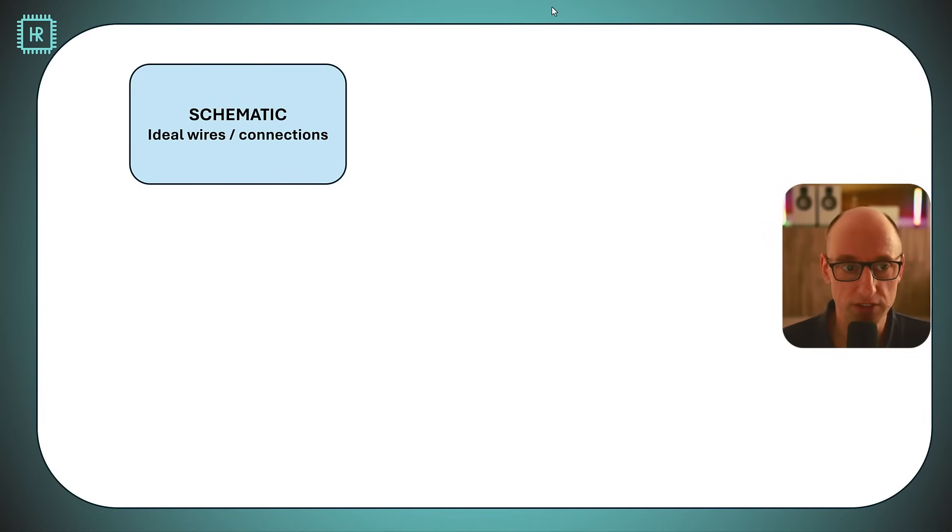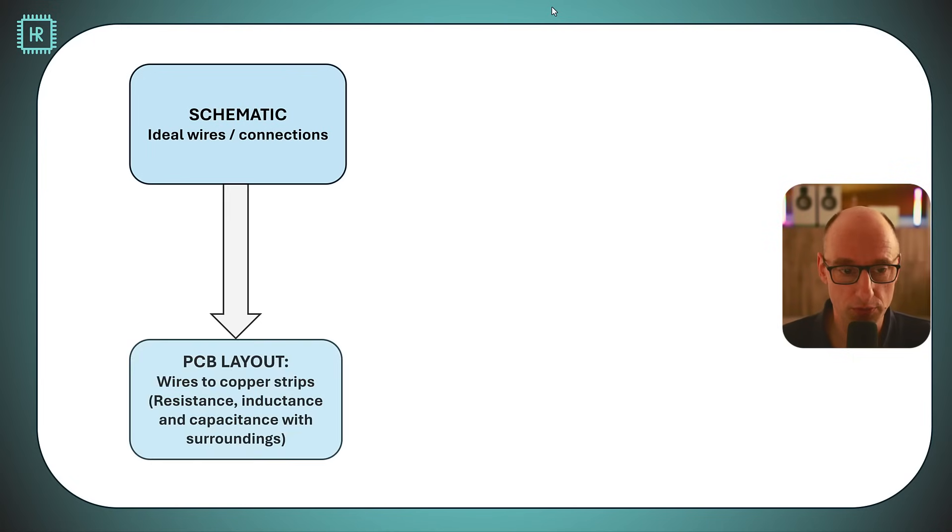When you enter a schematic, you're assuming ideal wires and connections. These things are basically superconductors. However, when you turn it into a layout, these ideal connections are turned into copper strips. These copper strips have a resistance, an inductance, and a capacitance to any other piece of copper on the board.